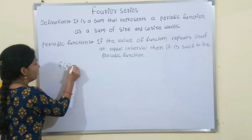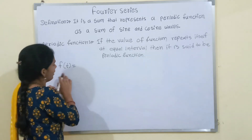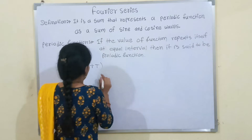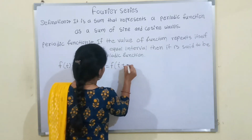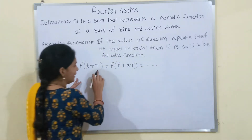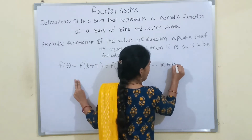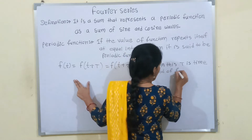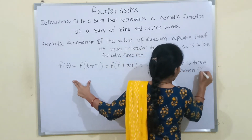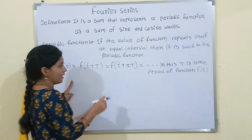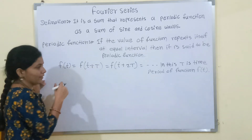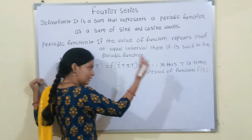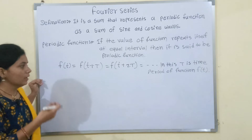Let us consider f(t) is a periodic function. Then it repeats itself: f(t + T) = f(t + 2T), and so on. Here T is the time period of function f(t). That means at equal interval T, the function f(t) repeats itself — at t + T, t + 2T, t + 3T, up to t + nT.